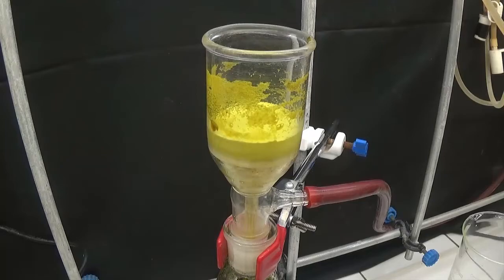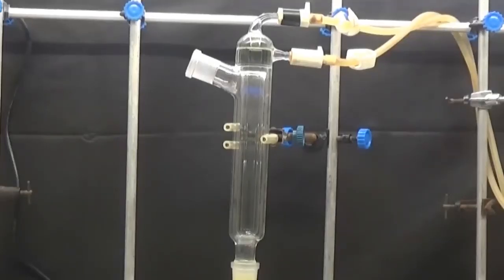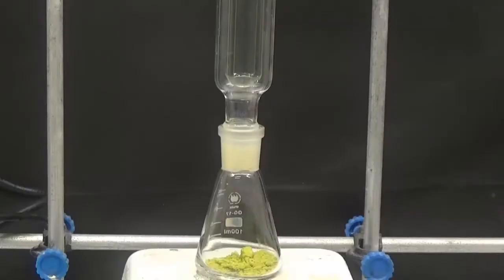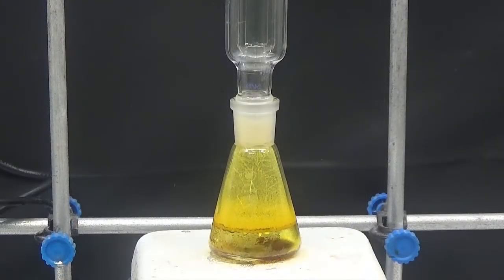For sublimation purification, we use a condenser called a cold finger, which is special for sublimation. We put a small amount of benzoquinone in a flask and mount the condenser. The flask is heated, and we can see how benzoquinone sublimates, forming long yellow needles.